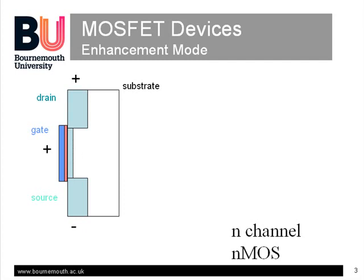This layer will form an N-type channel of electrons linking the electrons in the source and the drain. An electron current can then flow up from the source to the drain under the applied potential difference, forming a conventional current flow from the drain down to the source. The size of the current is controlled by the available electrons in the channel, which is in turn determined by the voltage of the attracting field applied to the gate. So we have a linear device with an output drain current controlled by the input gate voltage.